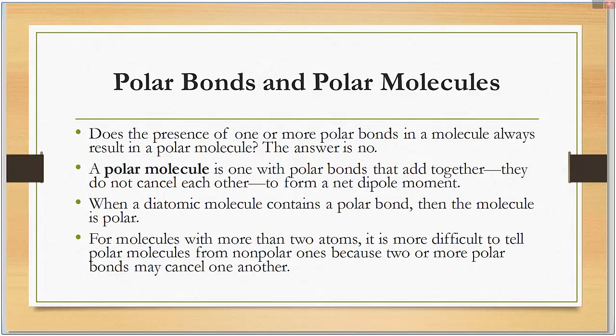Does the presence of one or more polar bonds in a molecule always result in a polar molecule? The answer is no. A polar molecule is one in which the polar bonds add together and do not cancel each other out from a net dipole moment. When a diatomic molecule contains a polar bond, then the molecule is polar because there is nothing to cancel it out. For molecules with more than two atoms, two or more polar bonds may cancel each other out.